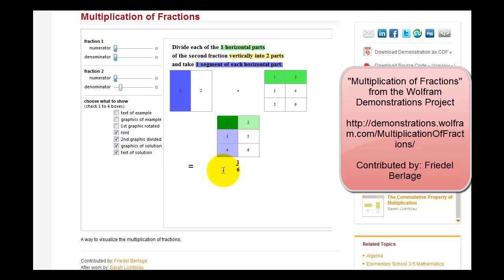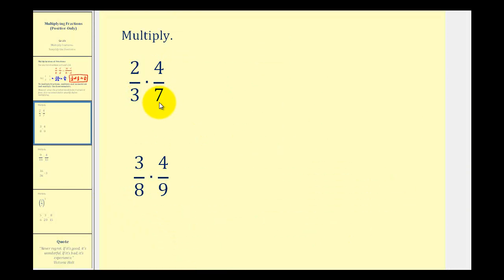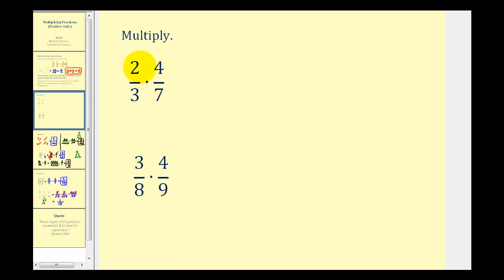So this is a nice way to demonstrate what's happening when we're multiplying fractions. Now let's look at some more examples. Here we have two-thirds times four-sevenths. We can just multiply the numerators and denominators, but we do want to try to simplify the fractions before we multiply by looking for common factors between the numerators and denominators. Since two and four don't have any common factors with three or seven, we can just multiply: two times four is equal to eight, and three times seven is equal to twenty-one. This would be our product.